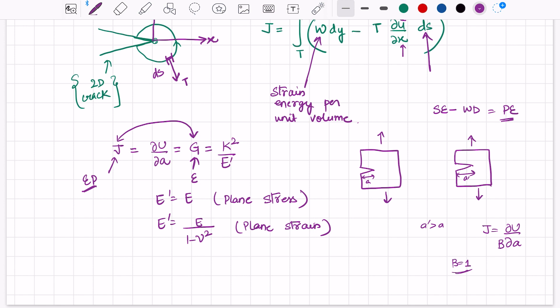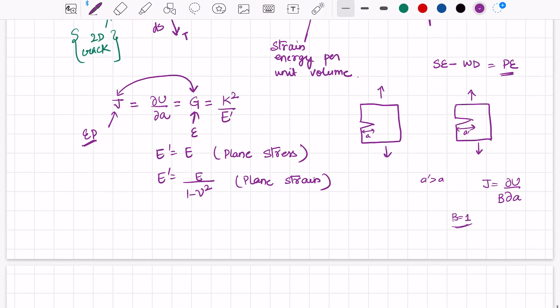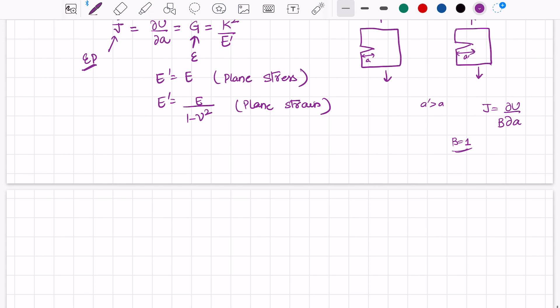To determine the J-integral value, we can consider a three-point bend specimen. We can either do testing on multiple specimens or on a single specimen. But if we are doing testing on a single specimen, then we have to carefully monitor the crack growth.